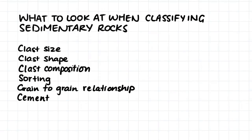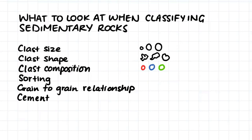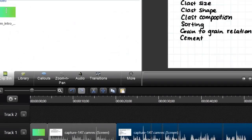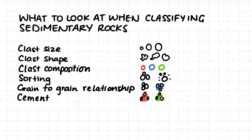So what do we look at when we're classifying sedimentary rocks? First we look at clast size, which is the size of the grains that make up our sedimentary rock. Then we look at clast shape, which is the shape of all the grains. We also look at clast composition — what material makes up our clast. We then look at sorting, which is a measure of how organised our particles are. We also look at grain-to-grain relationships: are the grains touching each other or are they separated by some sort of matrix or cement? And finally we look at our cement type, which is the mineral that is holding all our grains together.